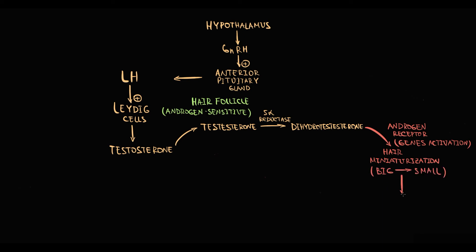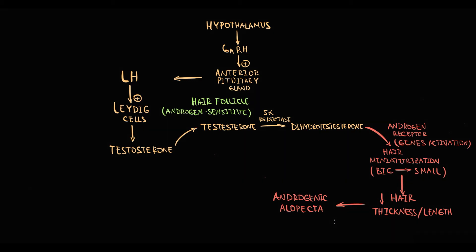With miniaturization, the thickness and length of hair decrease. As progressive miniaturization occurs, eventually the hair follicle becomes extremely small, looking like a bald area. This phenomenon is called androgenic alopecia, and the biggest problem is that it can lead to severe emotional distress, especially in a younger population.